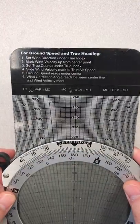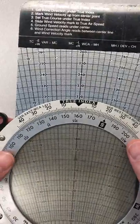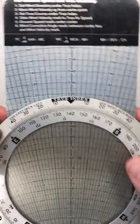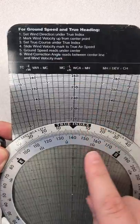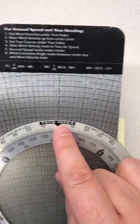Step three: set true course now on your true index. So true course was 1-4-0, and you can see it's not too far from that wind direction, so we're gonna have a headwind here. True course 1-4-0 opposite of our true index.